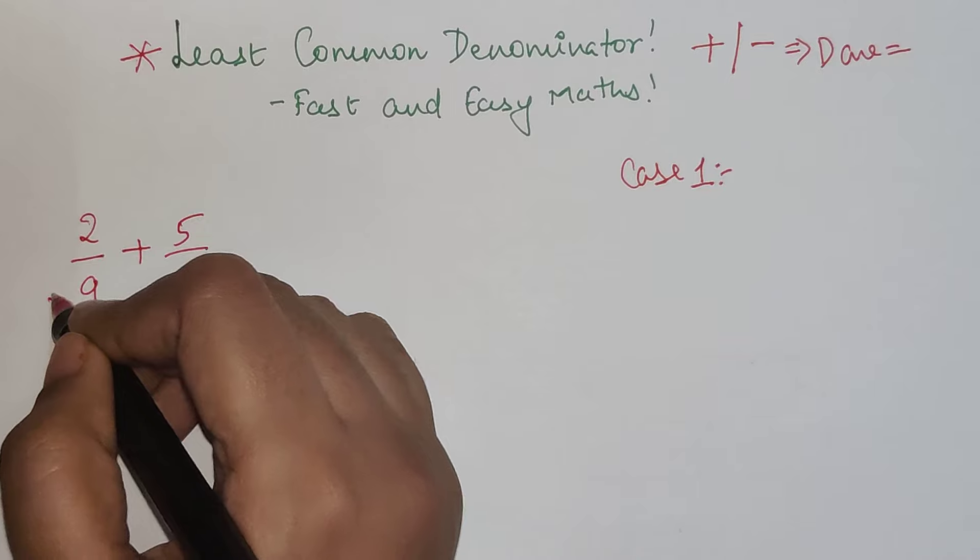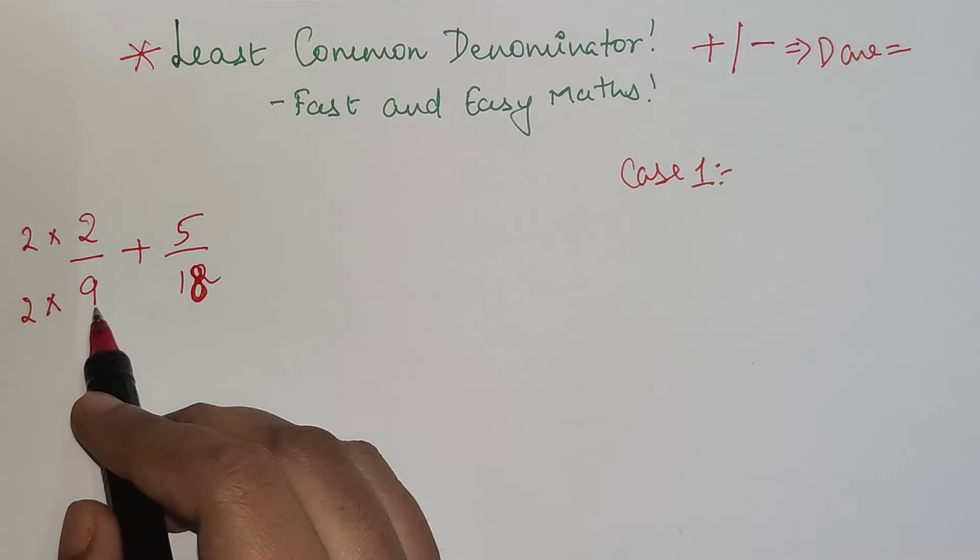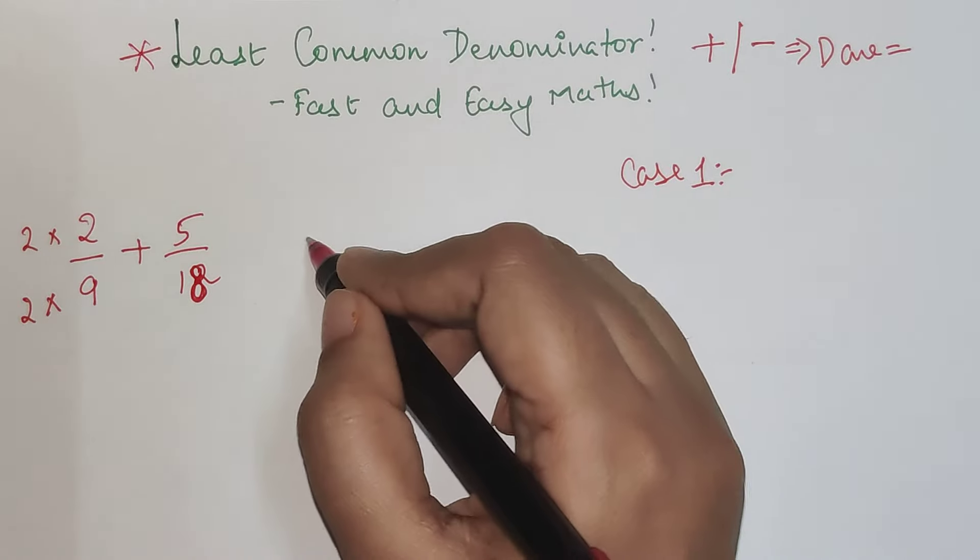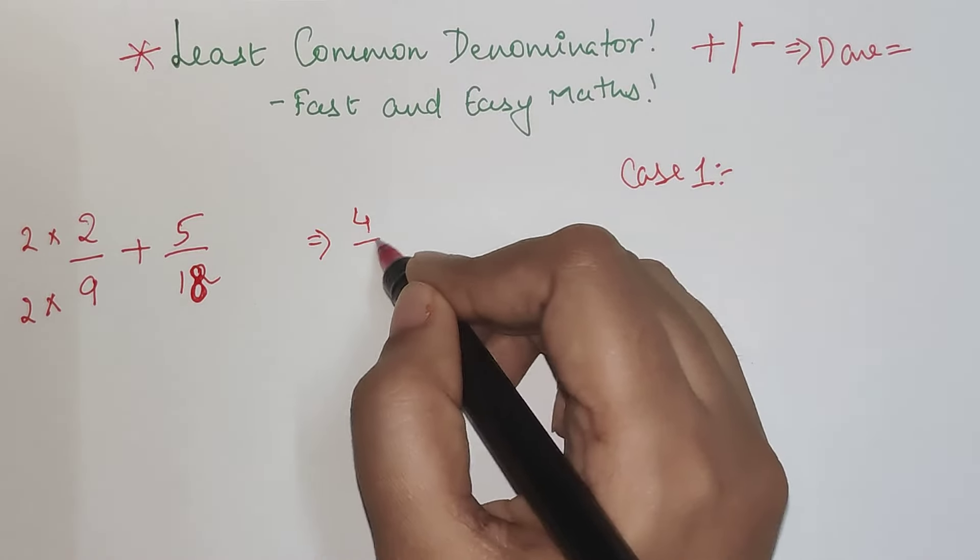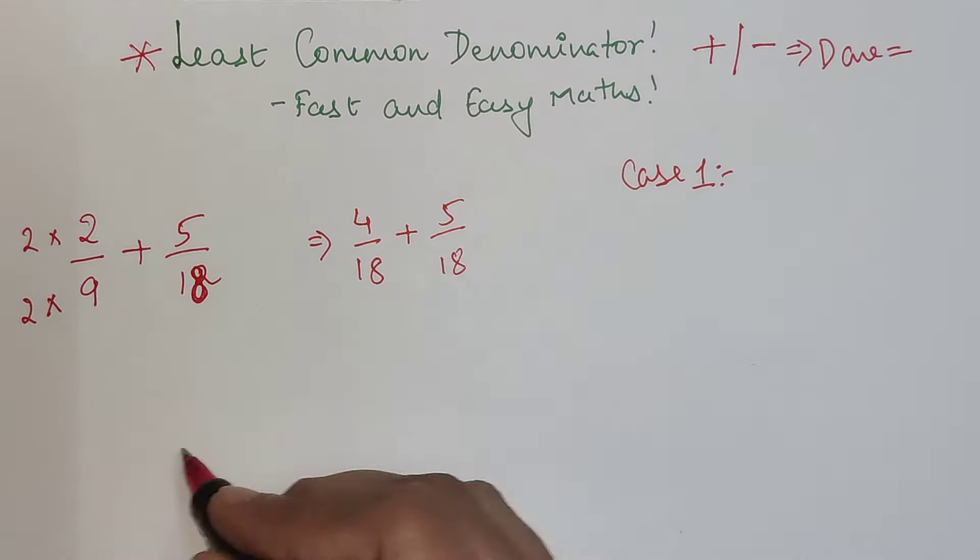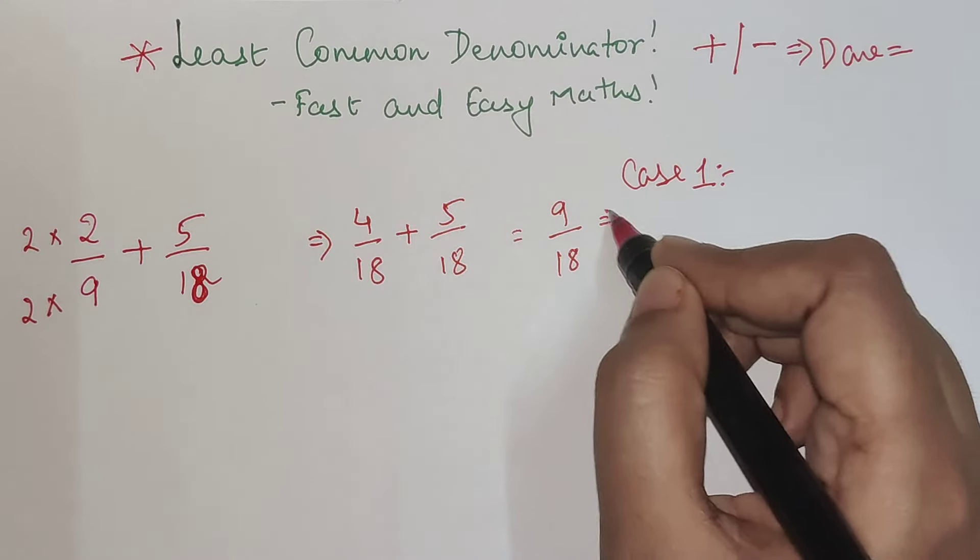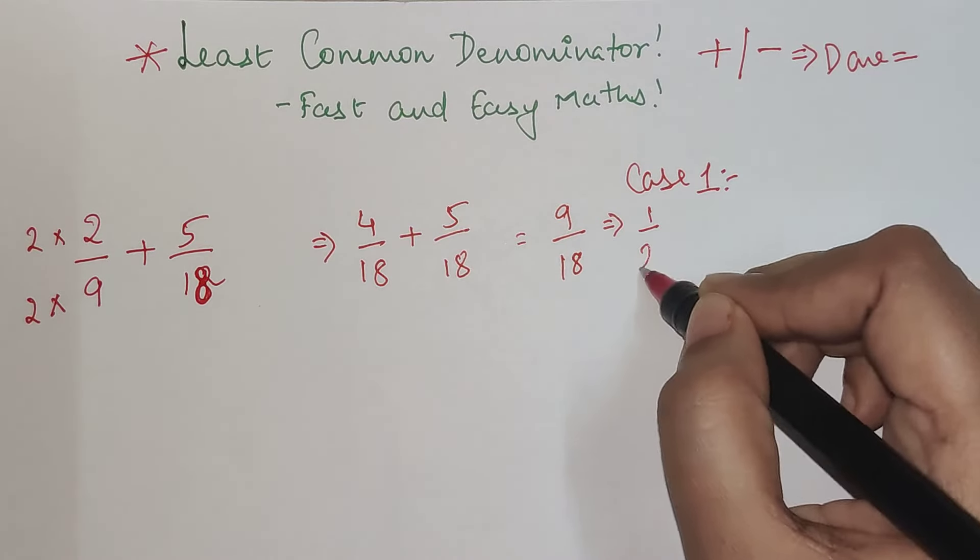I would do that by multiplying by 2 and 2. Because the moment I multiply 2 with 9, I'm getting 18. So I'm getting 4 upon 18 plus 5 upon 18. So my final answer is now coming out to be 9 upon 18, which is 1 upon 2.